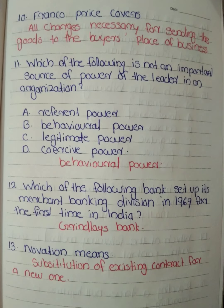Which of the following is not an important source of power of the leader of an organization? Options: Referent power, behavioral power, legitimate power, coercive power. Answer: Option B — Behavioral power.